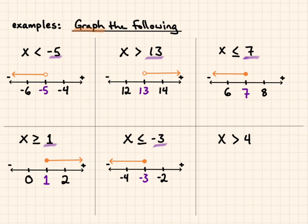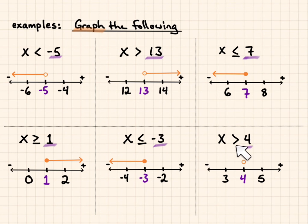For the last one, create your number line with 4 in the center, 3 towards the negative, and 5 towards the positive. Because it cannot be equal to, I leave this as an open circle. Because x is greater than 4, I draw an arrow towards the true values going towards the positive. Please let me know if you have any questions. As always, be kind to yourself, be kind to others, and I hope you have a great day.